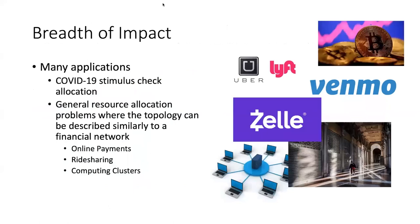Finally, this framework can extend beyond financial transactions. For example, it is suitable for ride-sharing, where nodes represent neighborhoods, edges represent the number of requested rides between two neighborhoods, allocations represent vehicles assigned to each neighborhood, and shocks correspond to adverse scenarios such as traffic. More generally, the framework is suitable for any supply and demand network where a defaulting node distributes its resources in a prorated way and we aim to do discrete resource allocation under a budget constraint. Further applications include online payments and computing clusters.